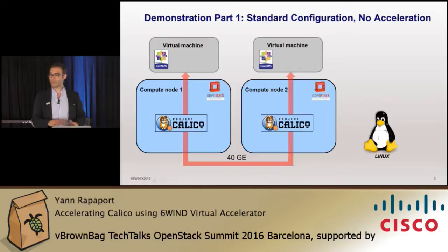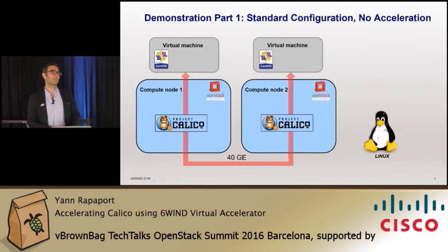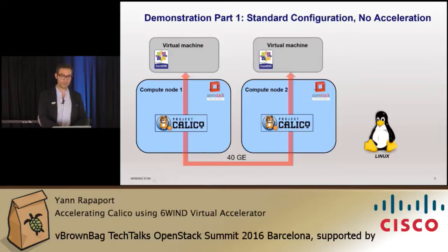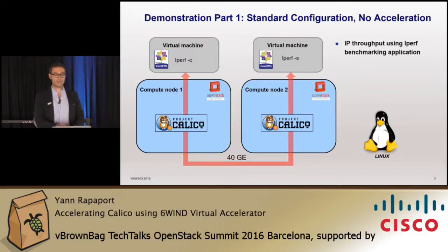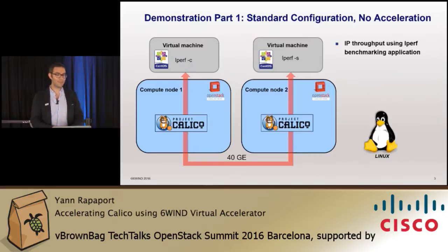We have the OpenStack Mitaka environment configured and one virtual machine running on top of each compute node. The compute nodes are connected using 40 gigahertz, and Calico is configured in the environment to provide L3 connectivity between the VMs. We will measure the performance of this environment.